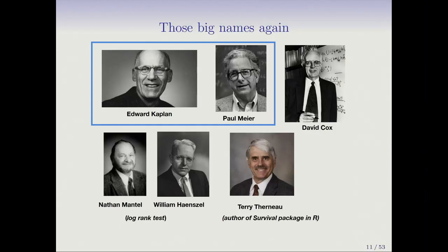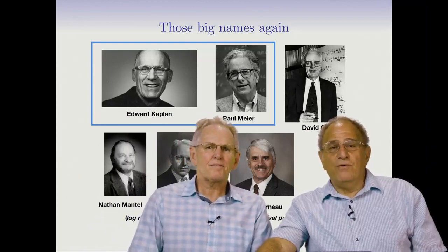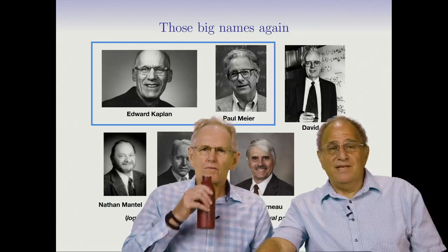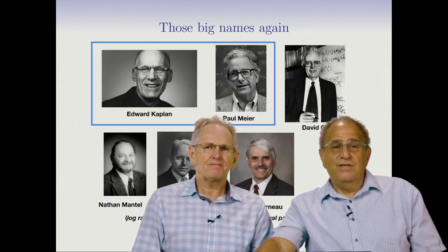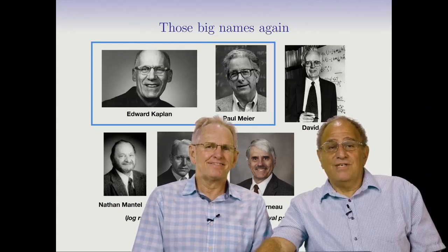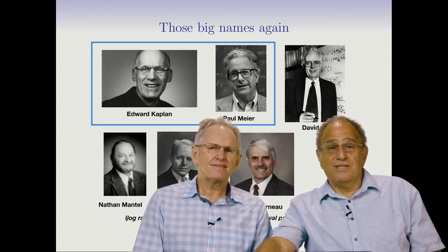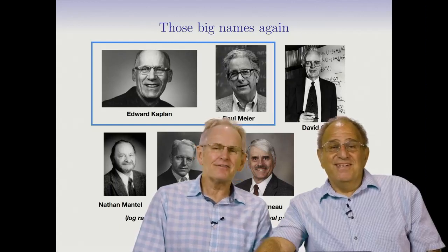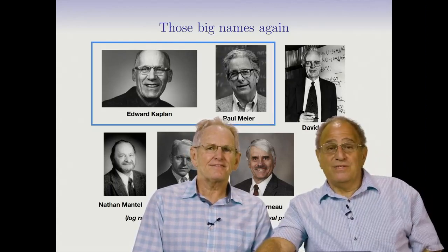This is where Kaplan and Meier come in. Trevor and I actually met Paul Meier at a biostatistics workshop at Stanford in the 80s. This paper is probably the most cited paper in all of statistics. Interestingly, it was a kind of forced marriage: Kaplan and Meier independently submitted papers on the same method to JASA, the Journal of the American Statistical Association. John Tukey, the famous statistician and editor, told them they had to write a paper together. Paul Meier told us he wasn't very happy about it at the time, but both authors contributed and the result was a blockbuster paper.